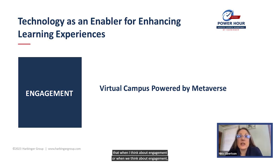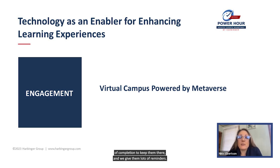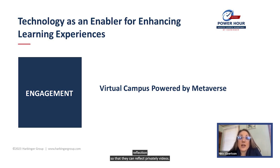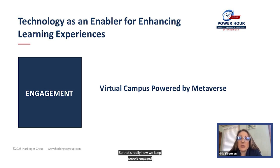When we think about engagement, we really think about how to get learners in and how to keep them in. Simple things like incentivizing them with a certificate of completion help keep them there. We give them lots of reminders: you have X amount of time left before you can get your certificate, or X number of points left in order to get your certificate. One of the other ways we really keep learners engaged is diversifying the learning experience — keeping it really textured, having a variety of ways to engage: discussion boards so they can talk to other learners, reflections so they can reflect privately, videos, and a combination of synchronous and asynchronous learning including Zoom meetings so they can interact with experts.